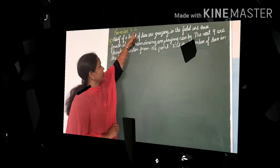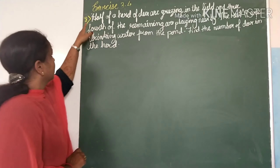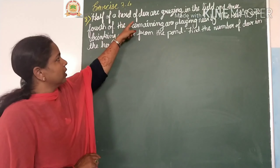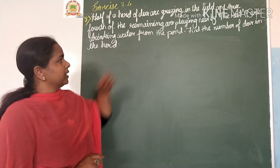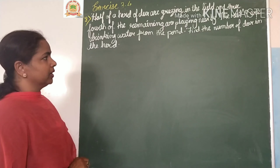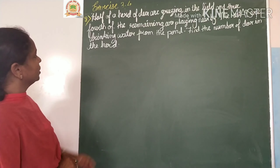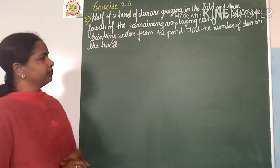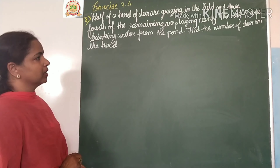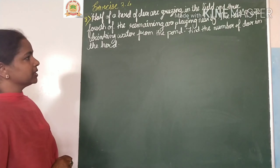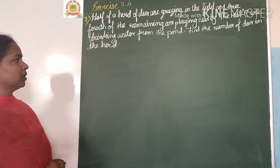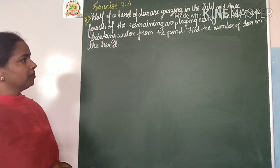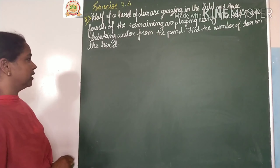Exercise 3.481. Half of a herd of deer are grazing in the field and three-fourths of the remaining are playing nearby. The rest, nine, are drinking water from the pond. Find the number of deer in the herd.